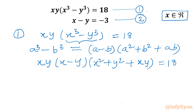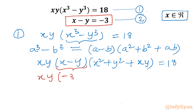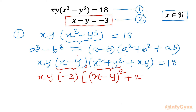From equation 2, x - y = -3. So we substitute -3 in place of (x - y), giving xy times (-3) times (x² + y² + xy) = 18. Now I write x² + y² as (x - y)² - 2xy + 2xy to compensate, so x² + y² = (x-y)² - 2xy + 2xy. The last term is xy, and the right-hand side is 18.